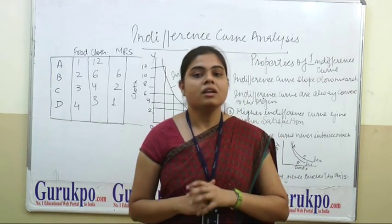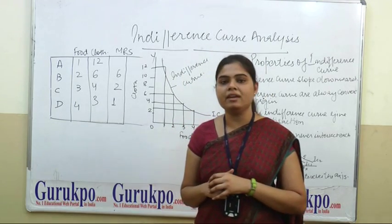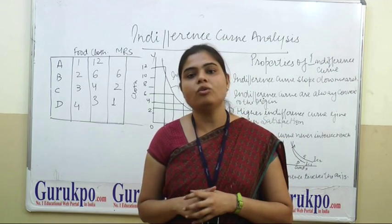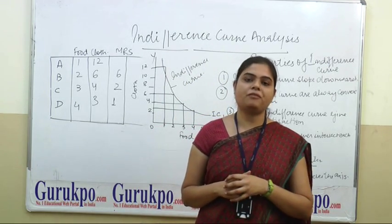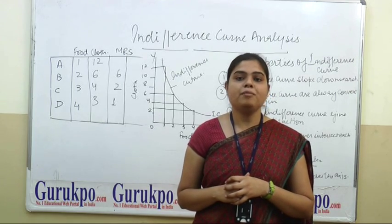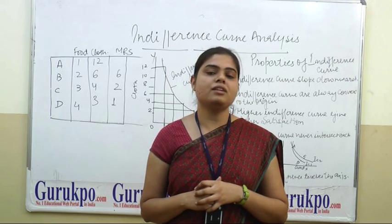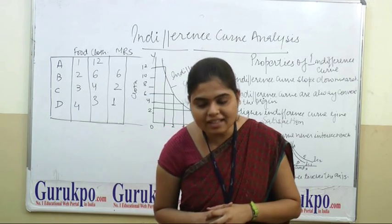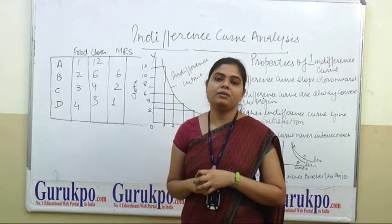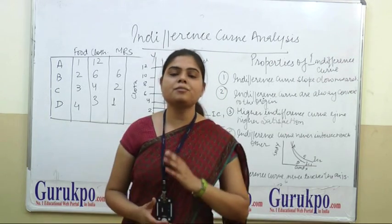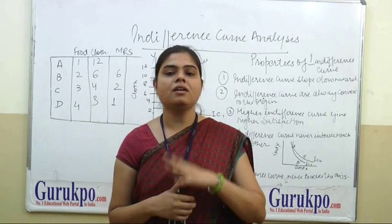First assumption is consistent choice of the consumer. If the consumer prefers A over B, then he always prefers A over B — he can never change his preference and can never prefer B over A. So there is consistency in the choice of the consumer. The next assumption is that it follows the law of diminishing marginal rate of substitution.